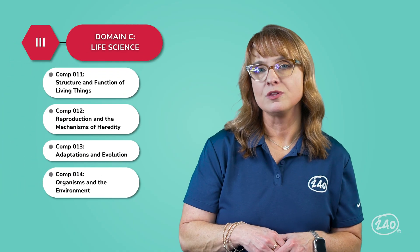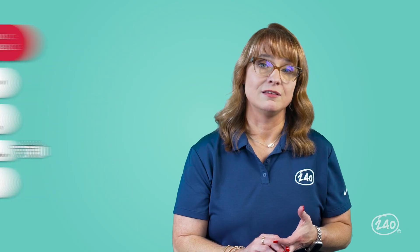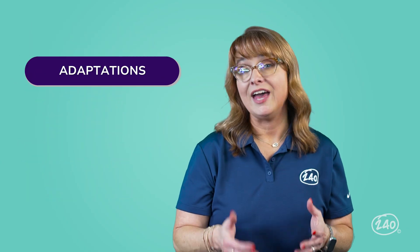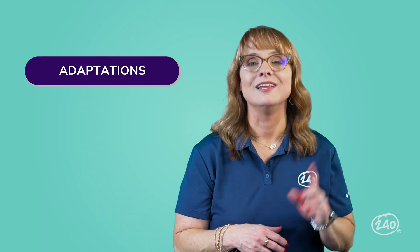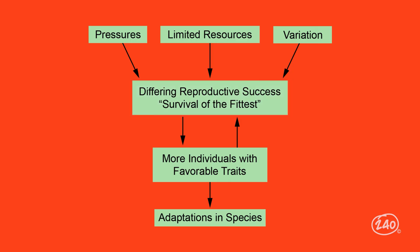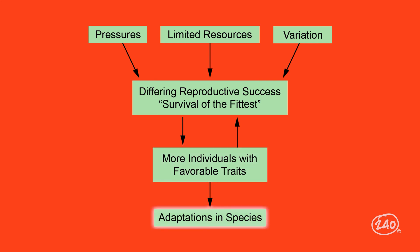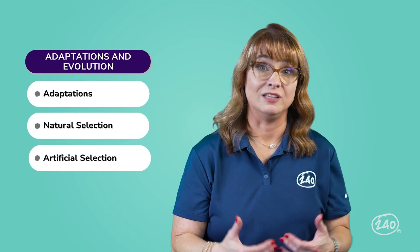Contrary to popular rumors, Texas does teach evolution. You're going to need to know the basics. All living things have adaptations that help them thrive in their environment — how did they get them? According to natural selection, reproductive success varies. This is survival of the fittest you've probably heard of. Over time, you get more individuals with favorable traits, and eventually the species gets adaptations. Also, make sure you know what artificial selection is.